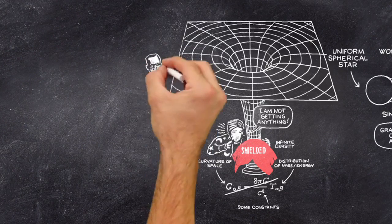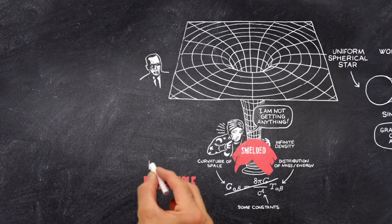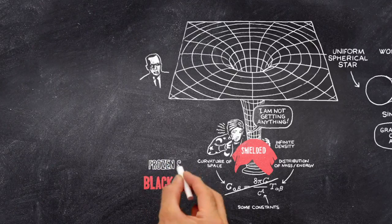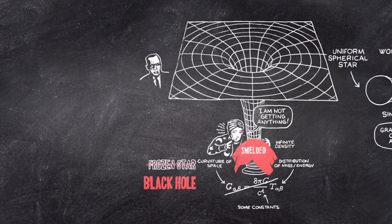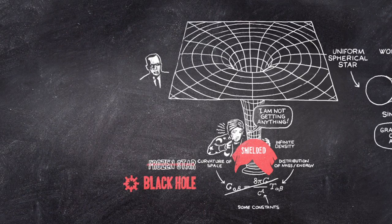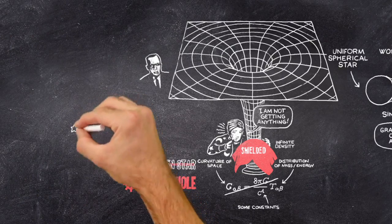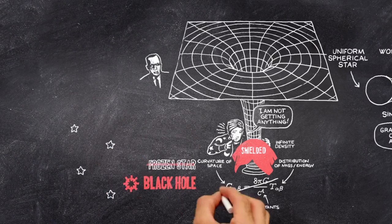When John Wheeler introduced the term black hole in 1967, it replaced the earlier name, frozen star. Wheeler's coinage emphasized that the remnants of collapsed stars are of interest in their own right, independently of how they were formed. The new name caught on quickly.